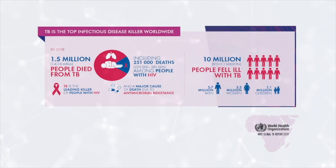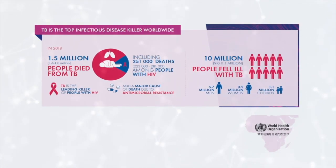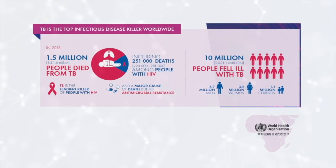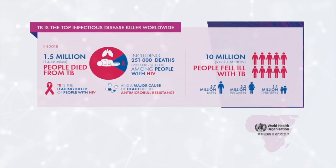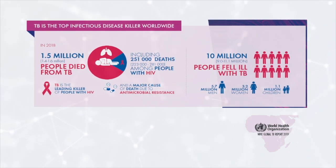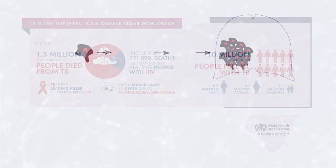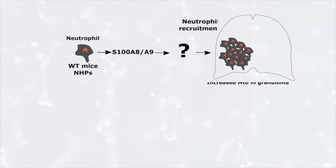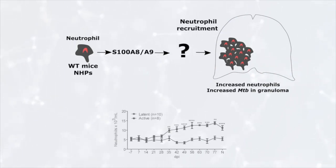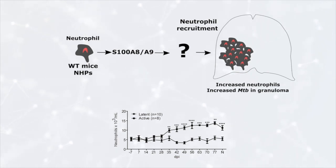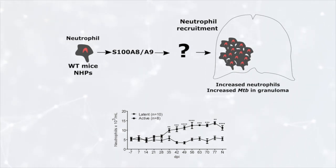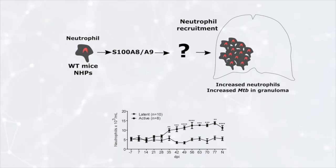Tuberculosis is a global health problem with one-fourth of the world's population infected with the disease. This infection results in 10 million new cases and 1.6 million deaths every year. Previous research has implicated the role of an immune cell called a neutrophil in driving TB disease in both animal models as well as in humans. However, the underlying mechanism by which a neutrophil mediates TB disease is not well elucidated.